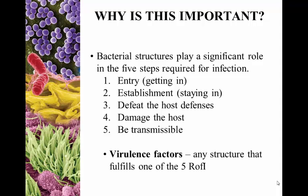Fourth is damaging the host. If it doesn't do damage, it's not necessarily disease-causing. In some instances, this is how we acquire things like normal microflora, and we don't worry about them. Fifth is being transmissible — these organisms would like to eventually have either themselves or their offspring move on to a new host. As we go through this chapter, be on the lookout for virulence factors — any structure that helps fulfill the five requirements of infection. A lot of structures will actually fulfill multiple requirements of infection, so note that this is not a one structure, one requirement relationship.